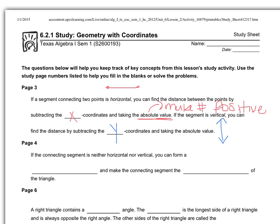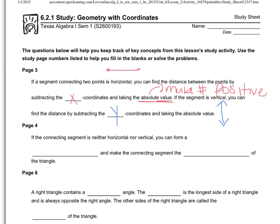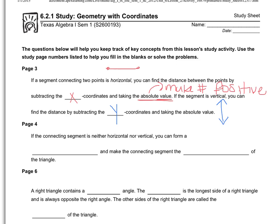So what happens if our segment is neither horizontal nor vertical, if instead it is diagonal? Well if it's diagonal, like this one, what we can do is we can form a right triangle and make the connecting segment the hypotenuse of the triangle. In other words, I make this a line and make this a line. Well now I have a right triangle with the diagonal being my hypotenuse. I'm just going to call it h-y-p for now.